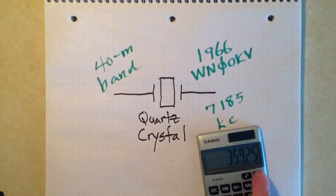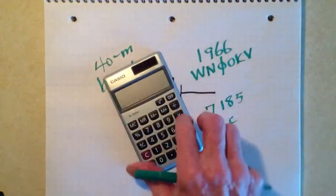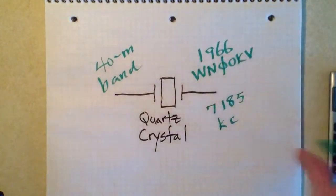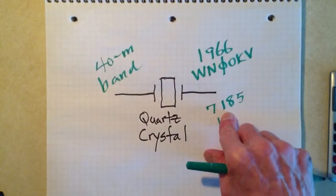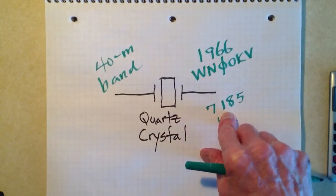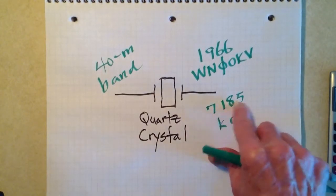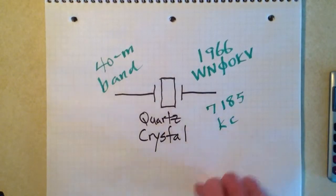Well, suppose that that crystal had had a tolerance of plus or minus 5%. 7185 times 0.05 equals 359 and a fraction kilohertz either side of this 7185. Now that would have been completely unacceptable. Either one of these extremes would have taken me outside the so-called 40-meter ham radio band, let alone the novice band. I would have been outside the whole band. Even a 1% tolerance, 7185 kilohertz, so even 1% plus or minus would be plus or minus 71.85 kilohertz. That would have been completely unacceptable.